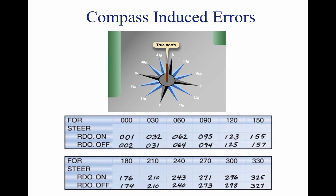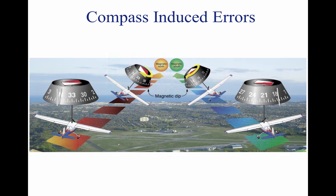The lines of magnetic flux are considered to leave the Earth at the magnetic north pole and enter at the magnetic south pole. At both locations, the lines are perpendicular to the Earth's surface. At the magnetic equator, which is halfway between the poles, the lines are parallel with the surface. The magnets in a compass align with this field, and near the poles they dip, or tilt, the float and card. The float is balanced with a small dip compensating weight to dampen the effects of dip when operating in the middle latitudes of the northern hemisphere.